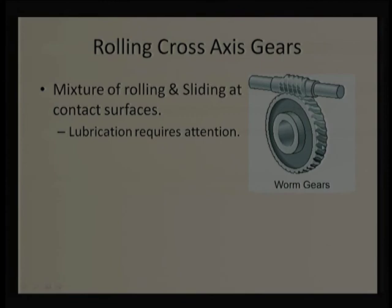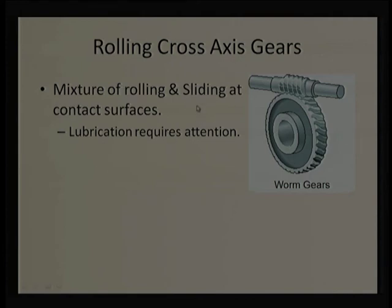In cross-axis gears, there is a mixture of rolling and sliding at the contact surface. Wherever there is sliding, lubrication is required; wherever there is rolling, there will be contact fatigue — similar to how bearing lives are estimated. This is shown with a worm gear, which can be seen from its large dimension difference. Worm gears have very high torque amplification — up to 40 times — so the torque transmitted to one shaft can reach 40 times on the other shaft. However, there is high sliding, which reduces their efficiency.